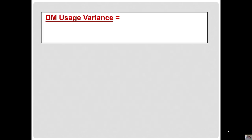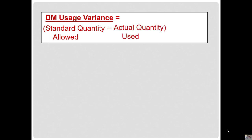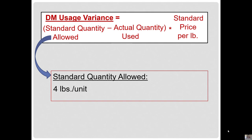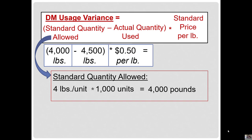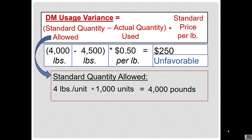Now the direct material usage variance: we are going to isolate the difference in what we should have used in production compared to what we did use in production, and multiply by the standard price per pound to get the total dollar impact on cost. The standard quantity is 4 pounds per unit times 1,000 units, so we should have used 4,000 pounds. We did use 4,500 pounds, so we have another unfavorable variance. Multiplying by 50 cents per pound gives us a $250 unfavorable variance.